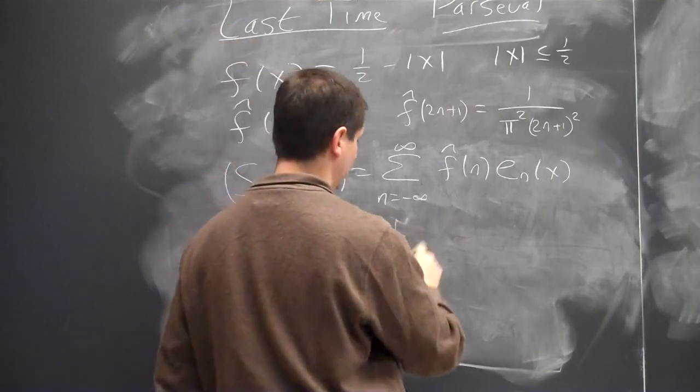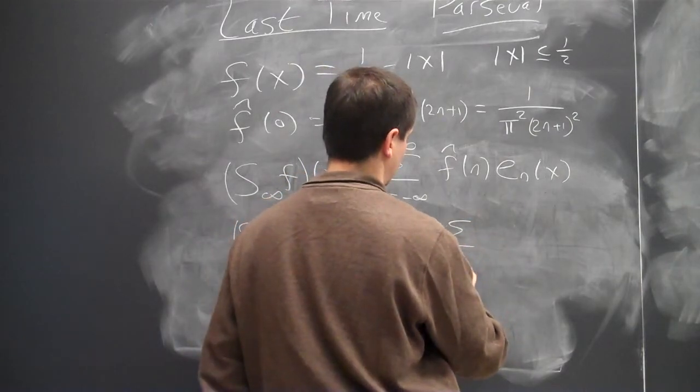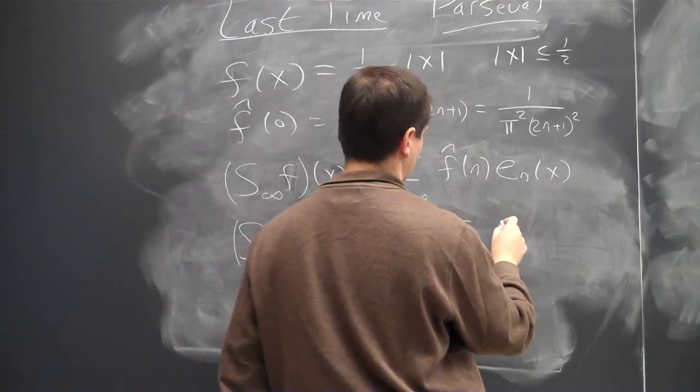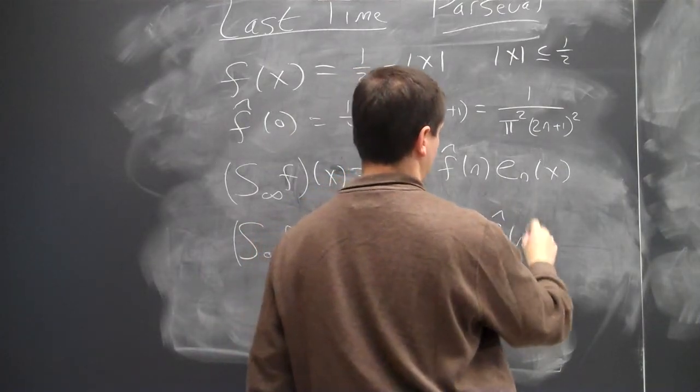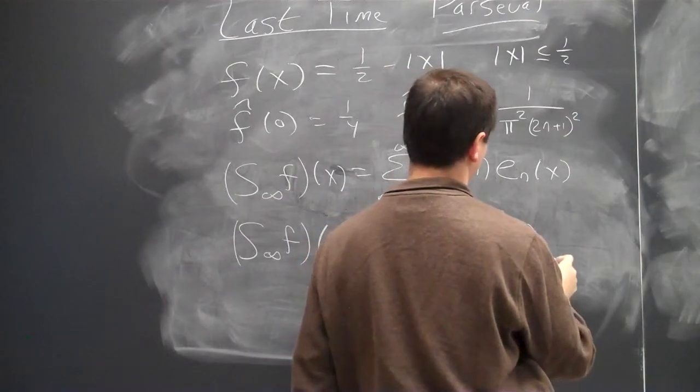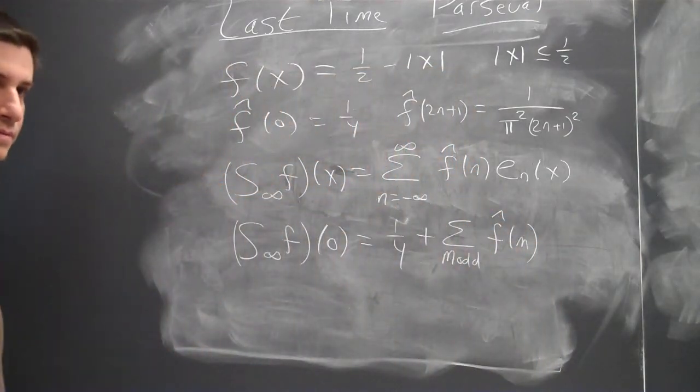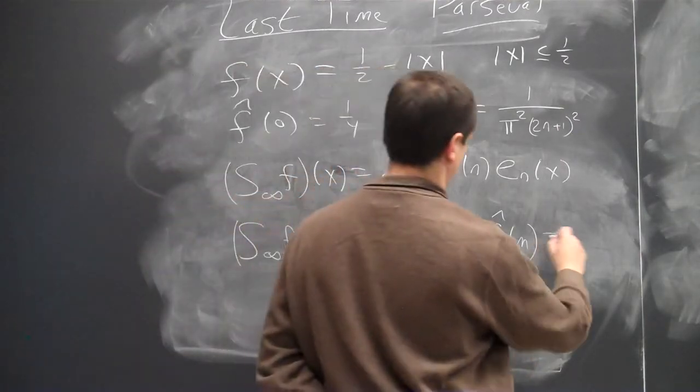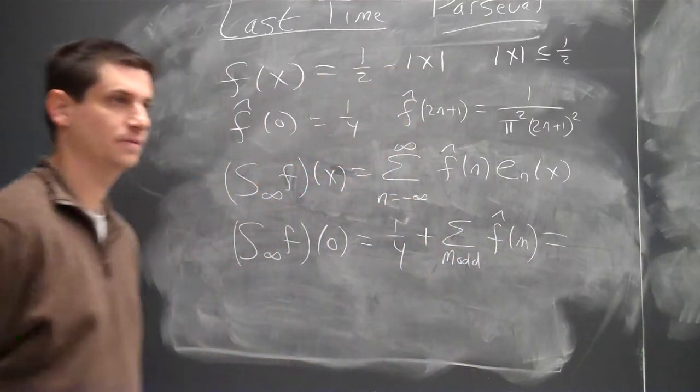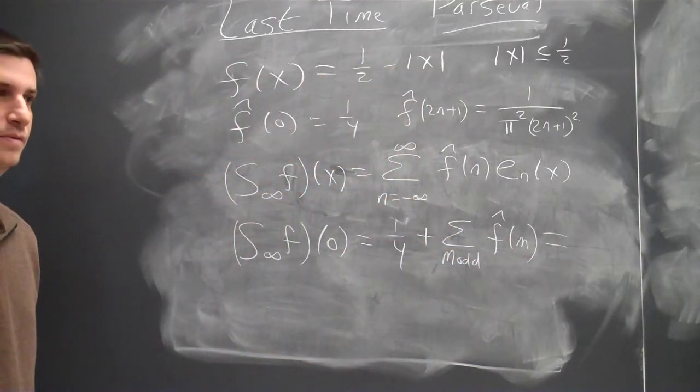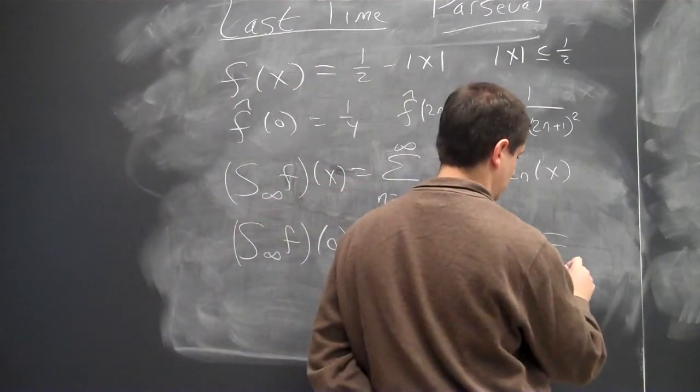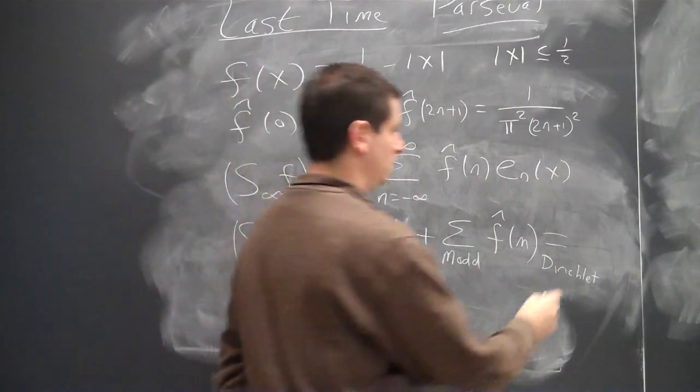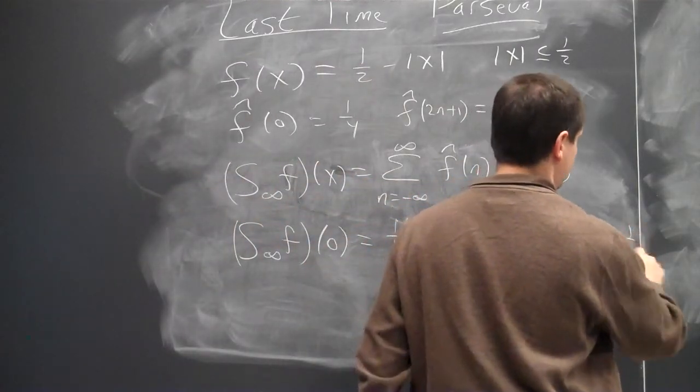So we're going to get one quarter plus the sum n is odd, f hat of n, right? Because all the other evens are zero. And what does this equal? A half. It equals f of zero, which is just a half.